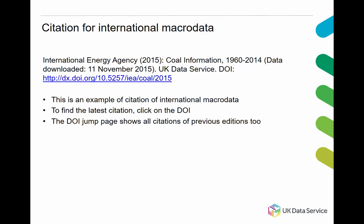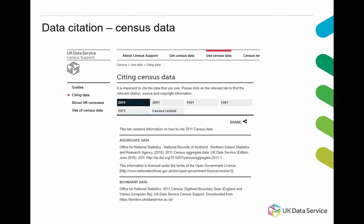The DOI jump page will show all citations of previous editions too. If an alternative DOI is given, it is for users obtaining the data directly from the international macro data source rather than through ukds.stat.